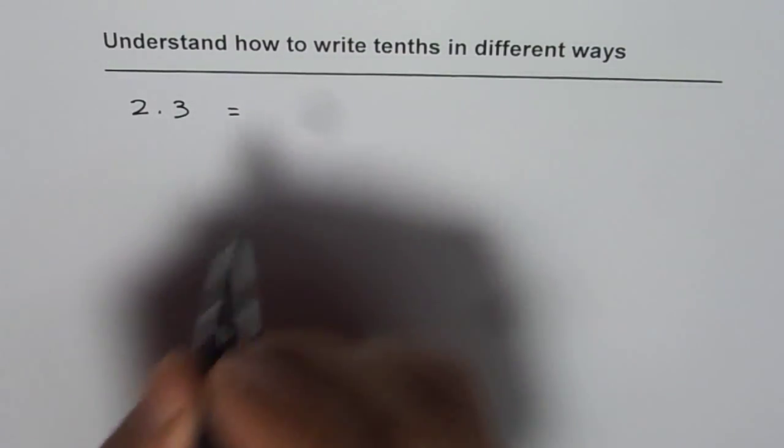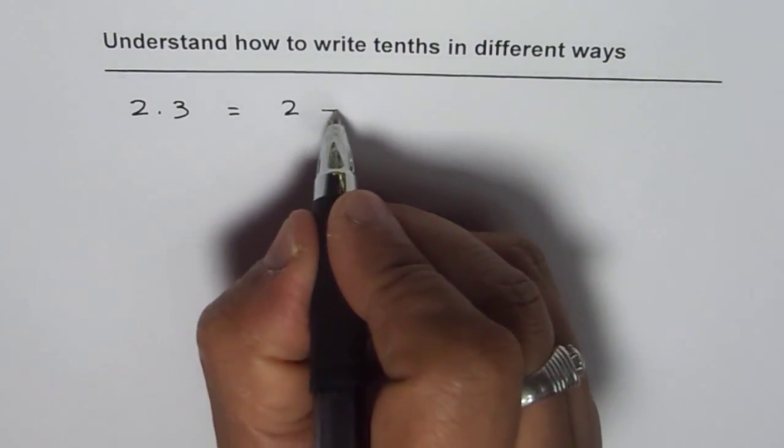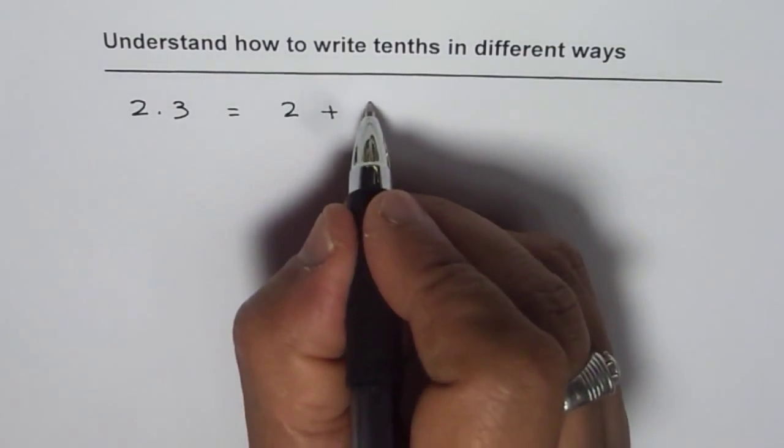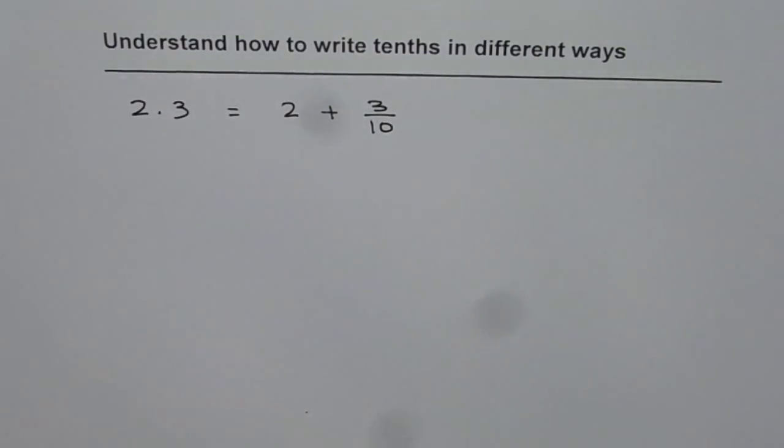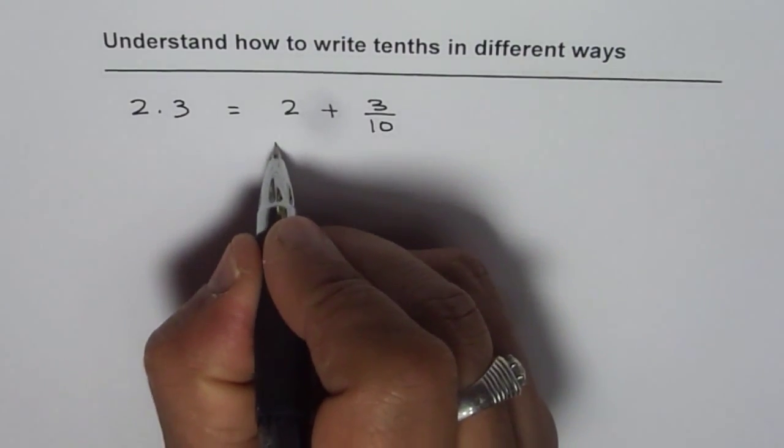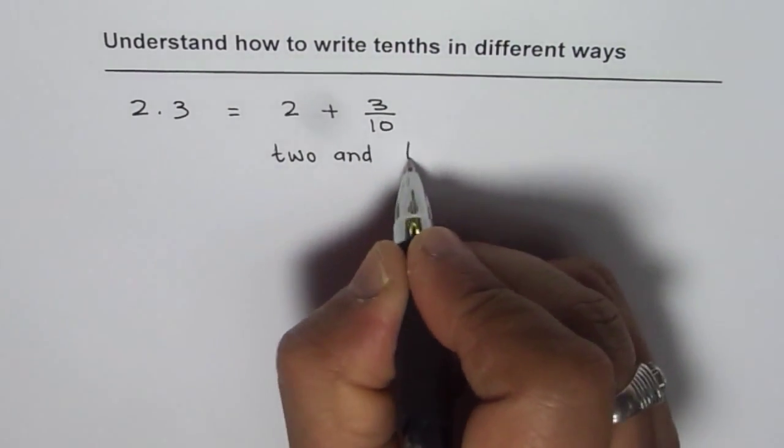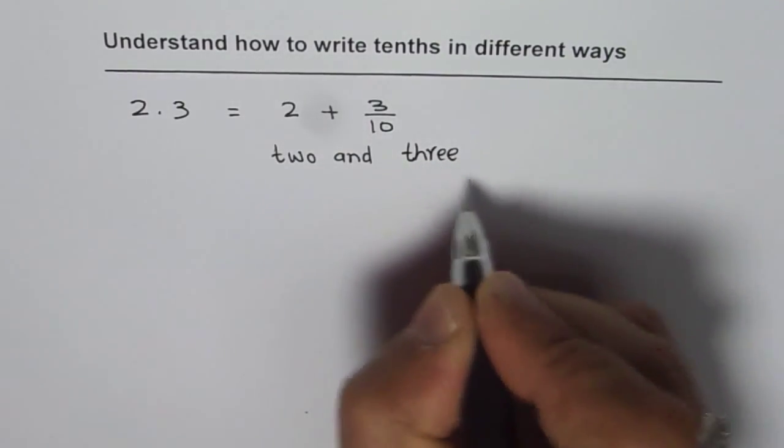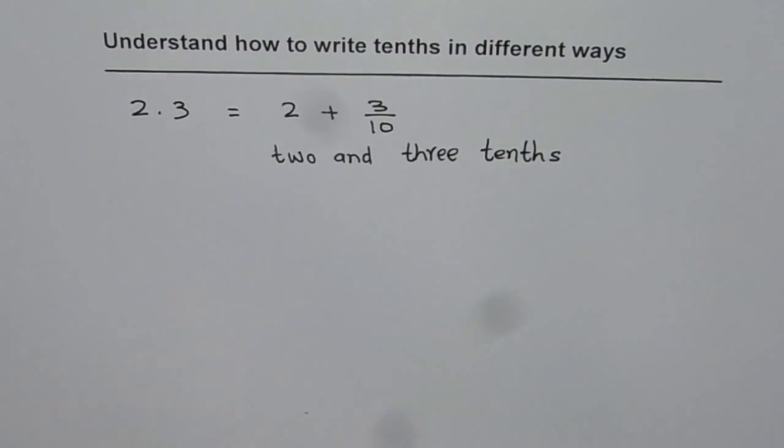We could write this number in expanded form as 2 plus 3/10. Three out of ten. We can also describe it in words, which is to say it is two and three tenths. So that is one way of describing 2.3.